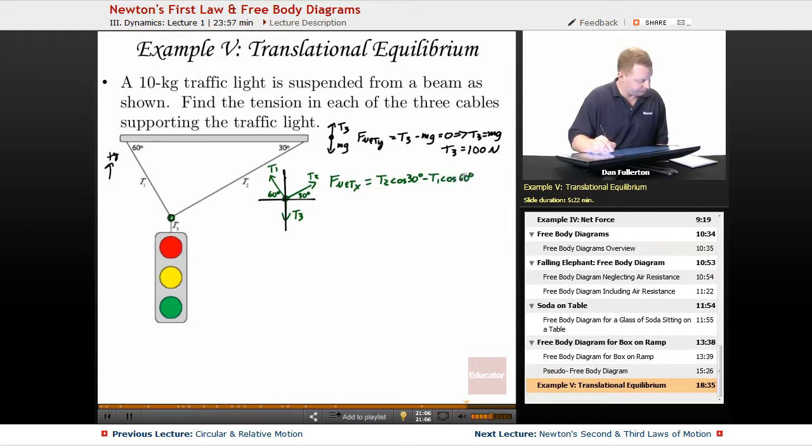And all of that has to equal zero. And we could try the same thing for the y direction. The net force in the y, which just means add up all the forces in the y direction, we're going to have T1 sin 60 degrees plus T2 sin 30 degrees minus T3 which is 100 newtons, so minus 100 newtons, all has to equal zero.